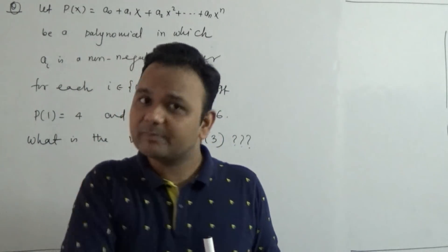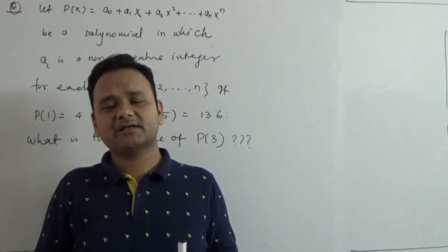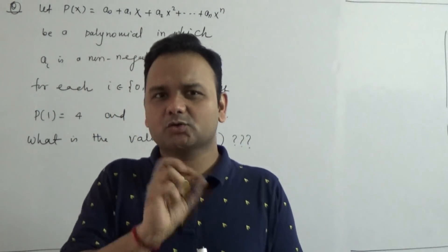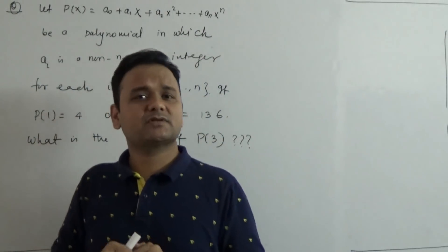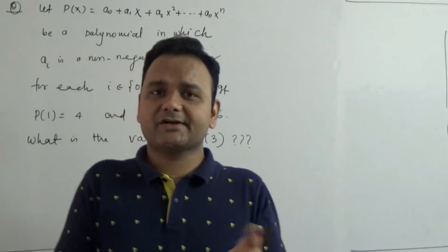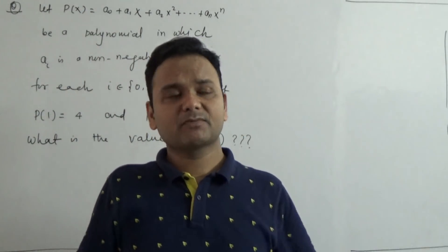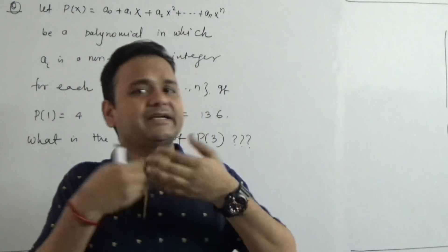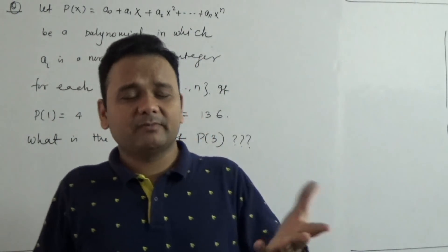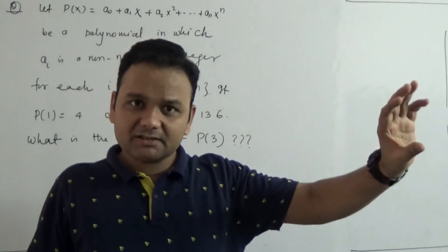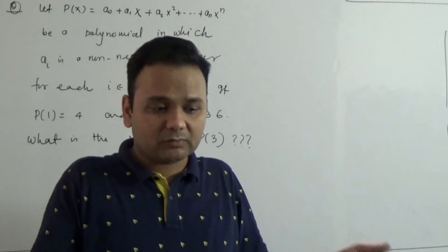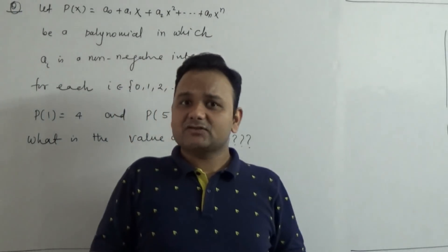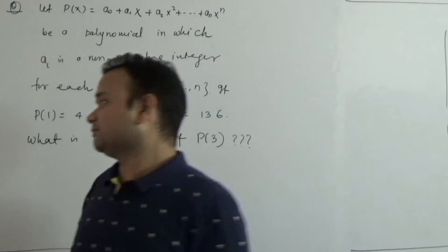To understand mathematics more deeply, we need a good command in polynomials. The question is: how should we approach problems where certain polynomials have values given at certain points, and how can we determine the value of the polynomial at any random point — say 5, 10, 12, or 20? Let's look at how one should approach this kind of problem.